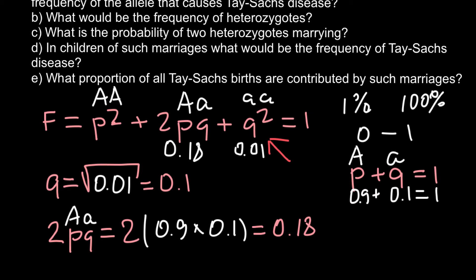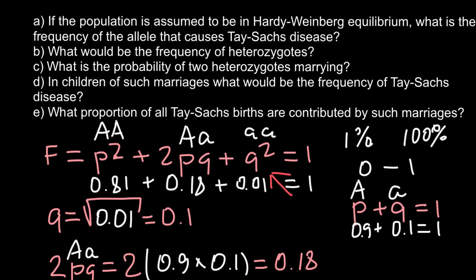We can also find the frequency of homozygous normal individuals. 0.18 + 0.01 gives us a frequency of 0.81. Adding all frequencies together gives us 1. So to summarize: Question A — the frequency of the defective recessive allele causing Tay-Sachs disease equals 0.1.